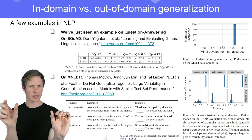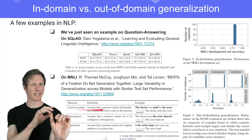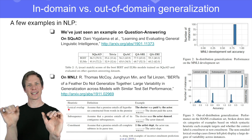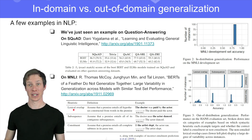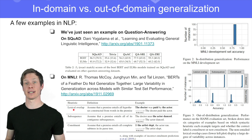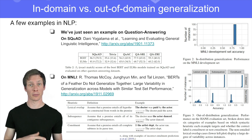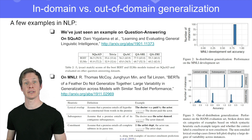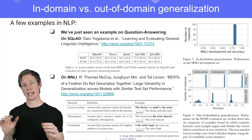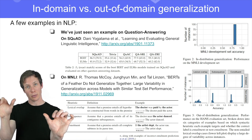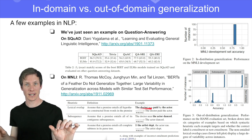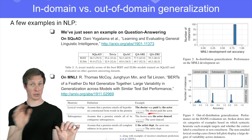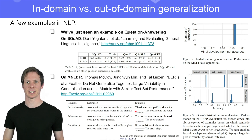There are very simple heuristics in the dataset: usually, if there is a NOT, it means contradiction; if there is a lot of lexical overlap, it means entailment. So they built an adversarial dataset called HANCE, which is available in the Transformers library. In HANCE, when there is a lot of lexical overlap, the correct label is actually contradiction.